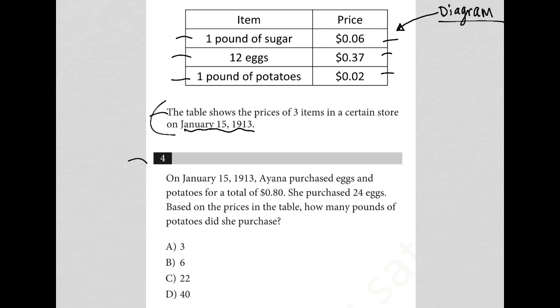of these things, because if she only bought one this would just be a total of 39 cents. So I'm going to say she bought eggs, so E plus P is equal to $0.80. She purchased 24 eggs.